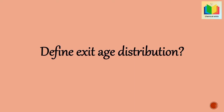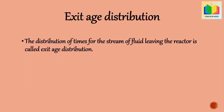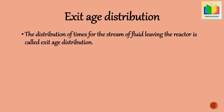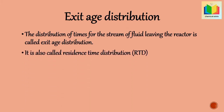Next question: define exit age distribution. The distribution of times for the stream of fluid leaving the reactor is called exit age distribution. In the reactor, every element of the fluid passes through different paths with different lengths of time. Hence there is a distribution of these times for the stream of fluid leaving the vessel. This is also called Residence Time Distribution (RTD). It is denoted by E, and has units of inverse time.